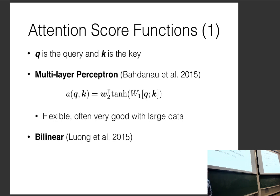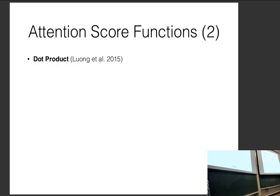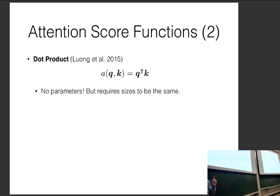However, MLP attention is a bit indirect. It's actually relatively difficult for an MLP to learn to compare two vectors for similarity. An easier way is the dot product: the more similar two vectors are, the higher the score. You take the dot product of the query and key vectors to get a score. This is a non-parametric model, but it requires the query and key vectors to be the same size.